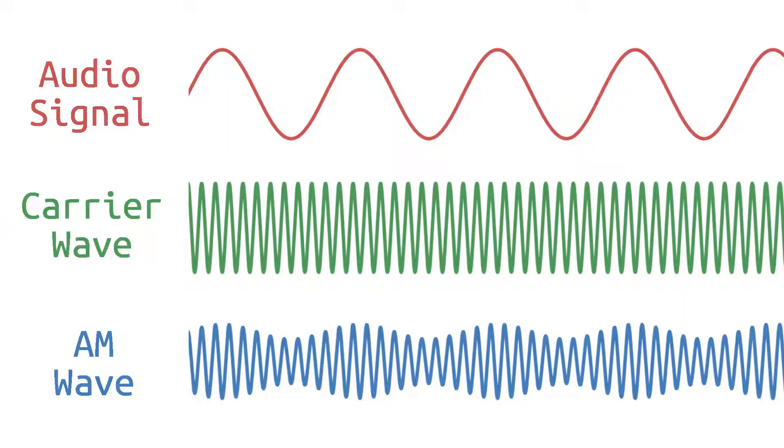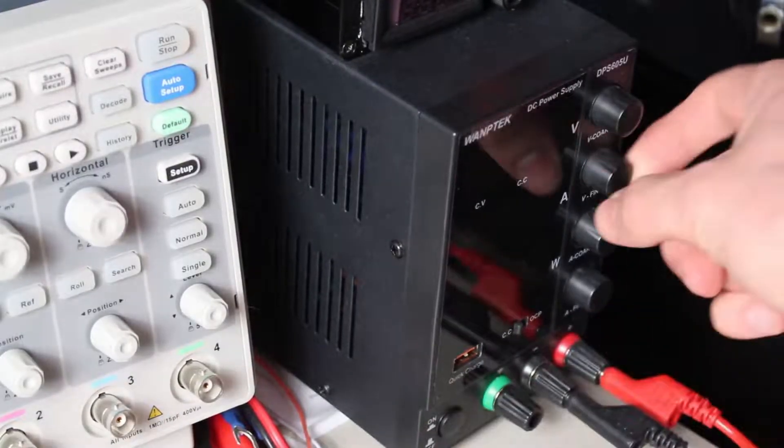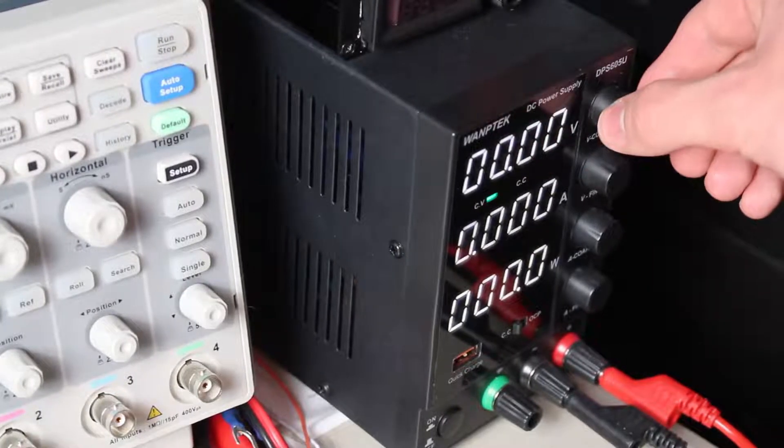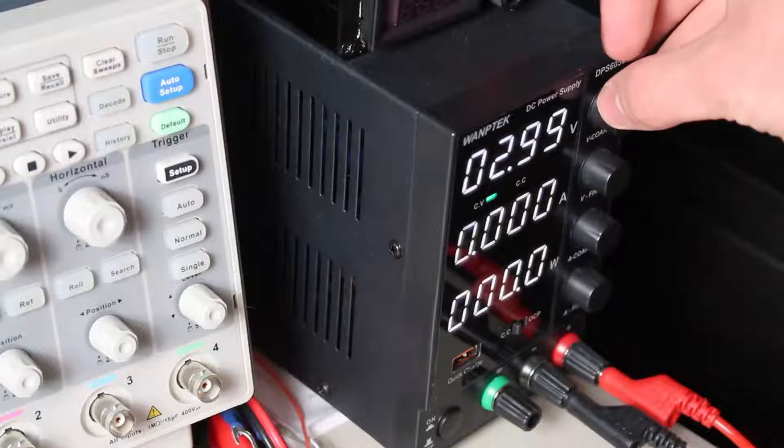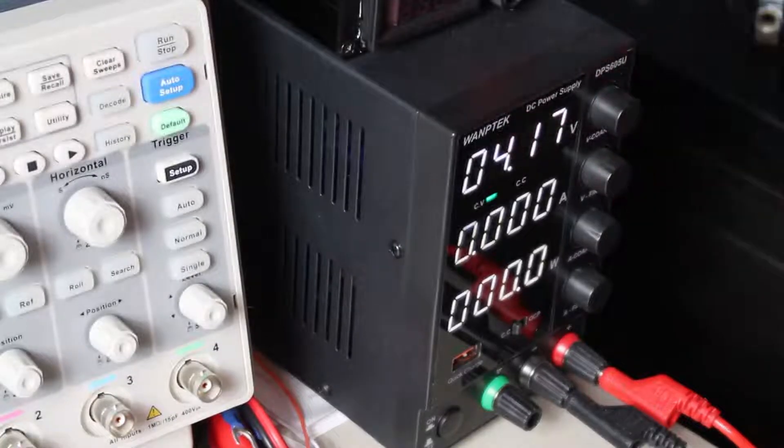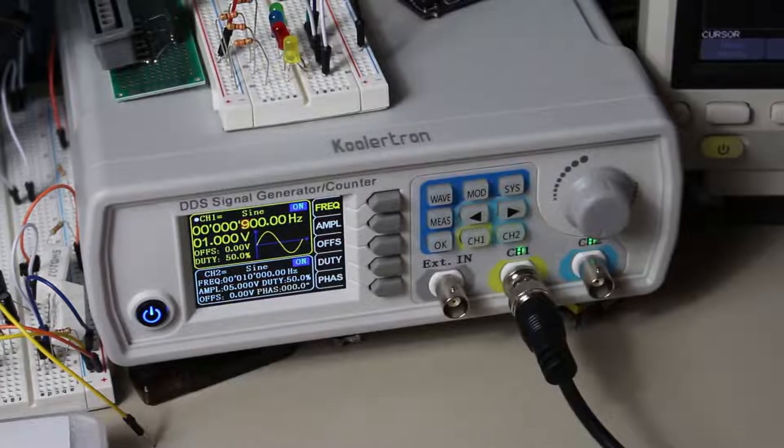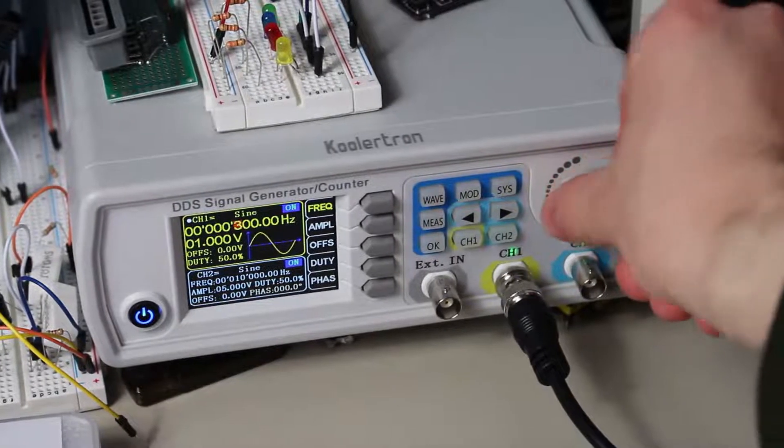Remember from earlier when I said that the amplitude of the output wave is based on the audio signal? Well, we can actually enhance our emitter follower to achieve that purpose. Basically, we want to reduce the supply voltage of the emitter when the audio signal is at its valley, and increase the supply voltage when the audio signal is at its peak. There are two ways to do that. The first is to modify the actual voltage source, which can be a bit tricky. The other is to raise the ground. And to do that, we can place a PNP transistor in between the ground reference and the emitter resistor. This will modify the virtual supply ground of the emitter follower.